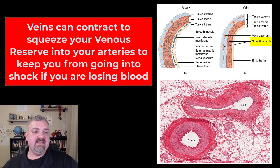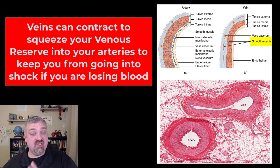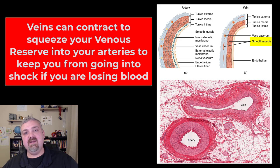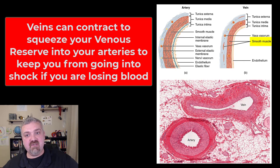Veins also have some smooth muscle on the outside. Veins are like a reservoir — about 21% of your blood is in what's called a venous reserve inside your venous system. There's actually more blood in your veins than in your arteries, primarily in your bone marrow, skin, and liver. If you're losing blood, these veins can contract and squeeze that excess blood into the arterial system. That's why you have to lose about 20% of your blood before you see signs of hypovolemic shock — because you have this reservoir.